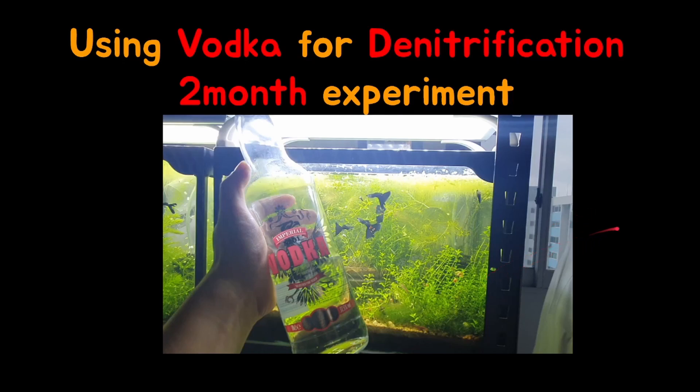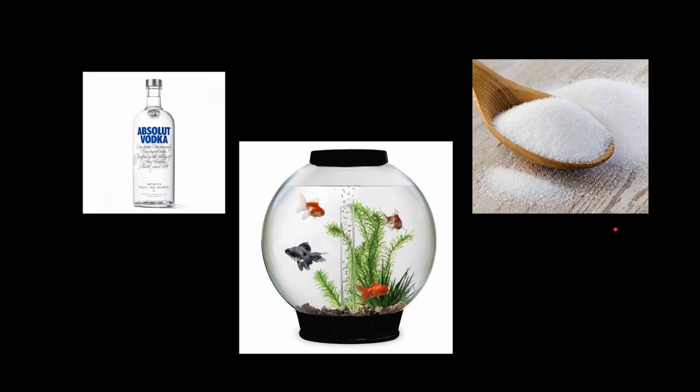I think I'll have to explain what carbon dosing actually is. Carbon dosing is the practice of adding a carbon source, such as vodka or sugar, into your fish tank to get rid of nitrates. So you may be wondering, how the hell can adding vodka or sugar get rid of nitrates?